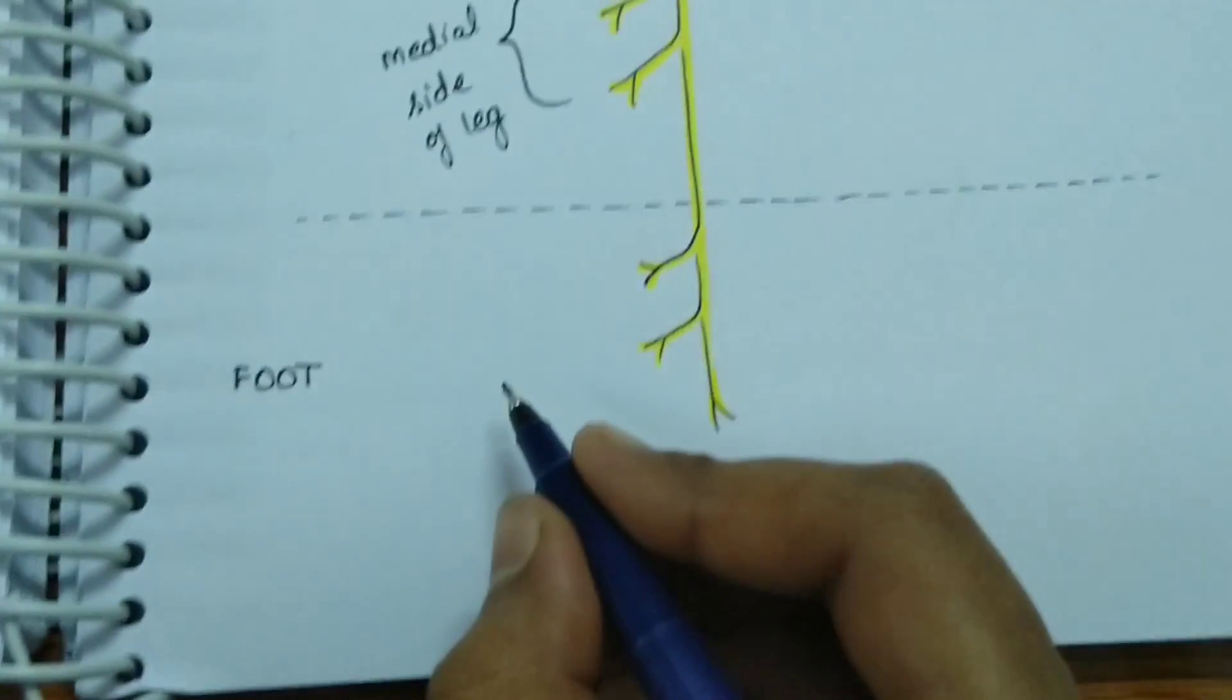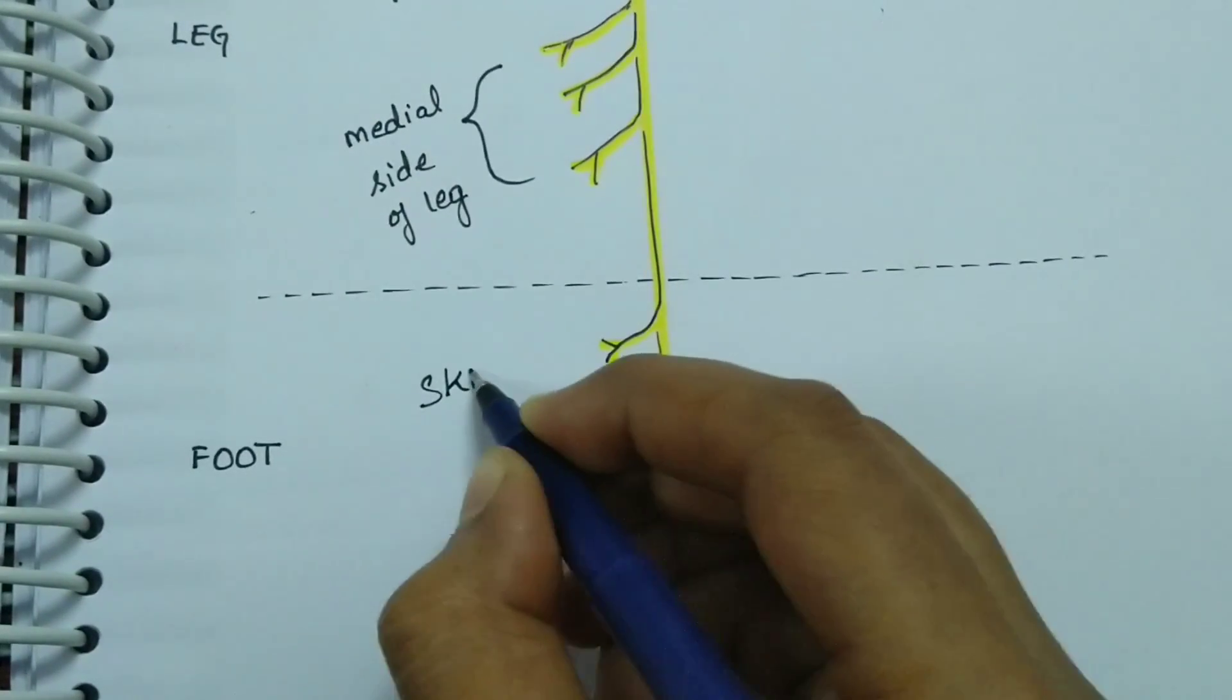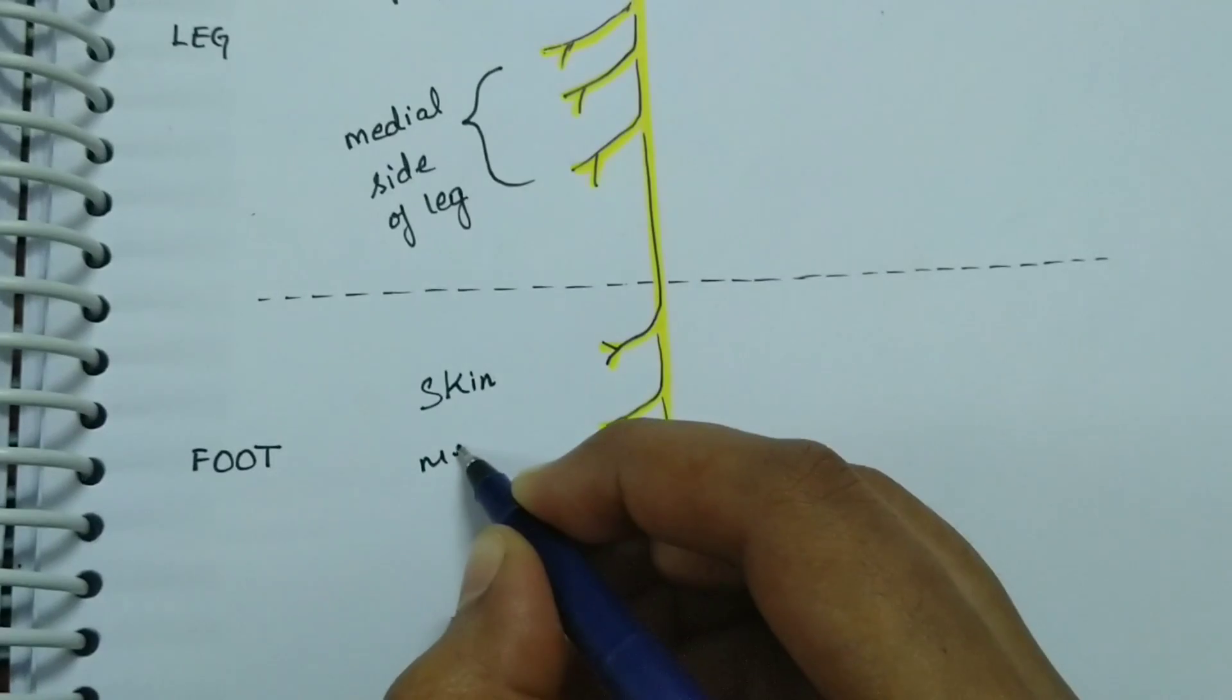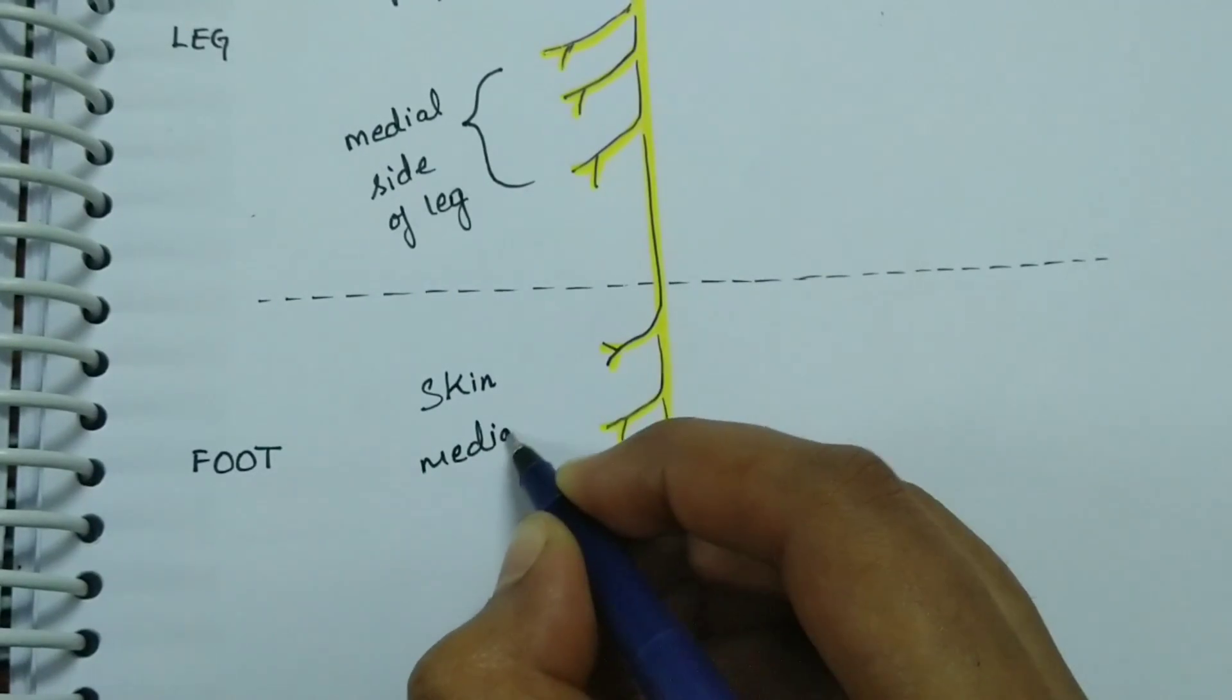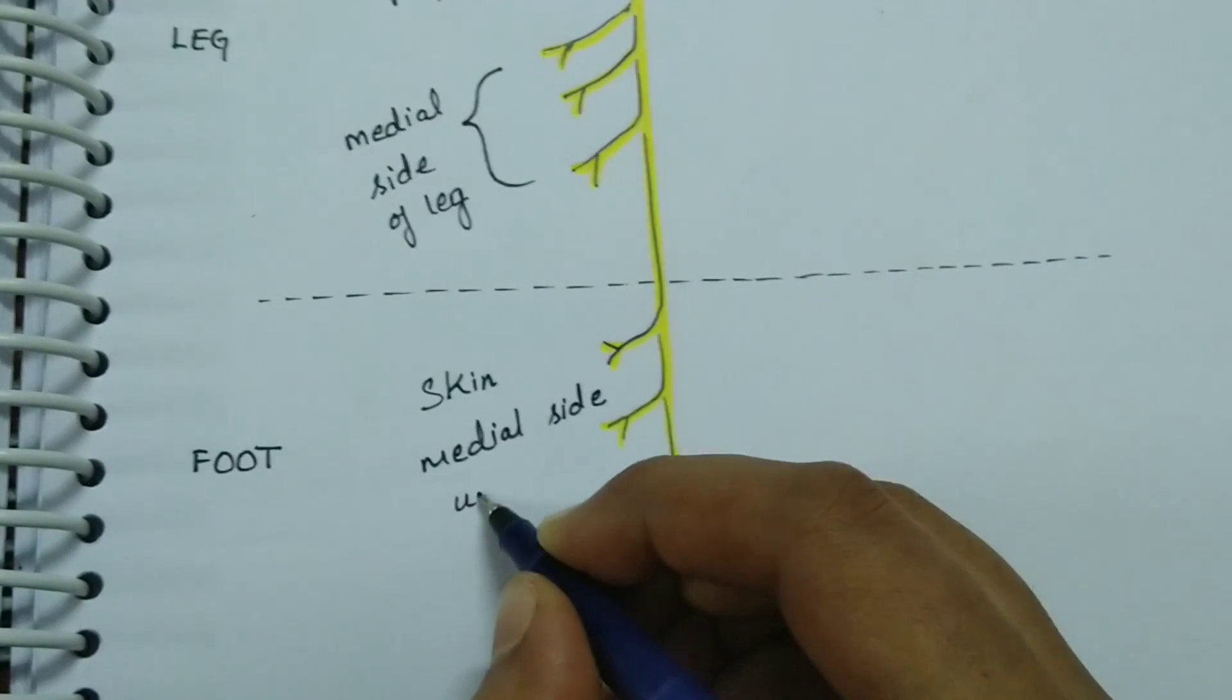In the foot it supplies the skin on the medial side up to the ball of great toe.